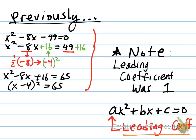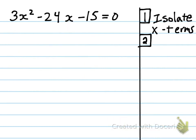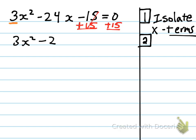So here's today's problem: 3x squared minus 24x minus 15. Notice that the leading coefficient here is 3. That's going to be a little bit of an issue. But the first step is, just like last time, isolate the x terms — get x by itself. So simply add 15 to both sides. And that leaves us with 3x squared minus 24x — leave a space, and you'll see why — equals 15.